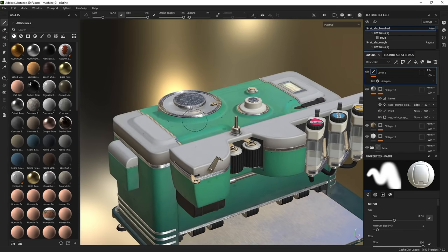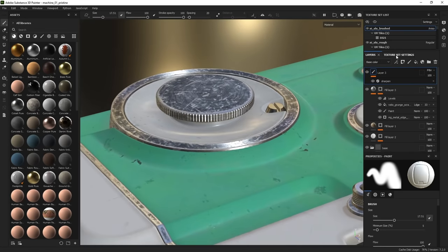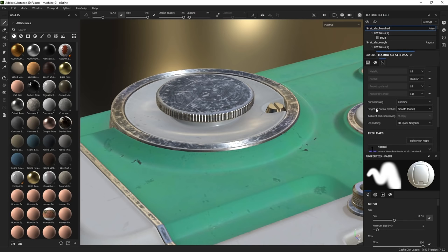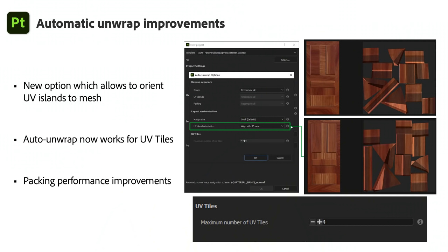Painter takes height information and converts it to normal detail, as it's easier to work with height in black and white. We've added a new conversion method called 'sharp,' which you can find in texture set settings. This new method is more precise for high-frequency and hard surface details, especially when your material is a tiling one. We also made updates to our auto-unwrap feature — you can now select UV island orientation, allowing you to orient your UVs in the sense of your mesh, useful for rigid meshes like planks or doors. Auto-unwrap also works with UV tiles now.